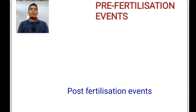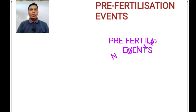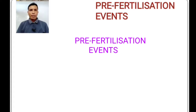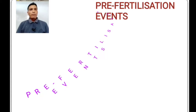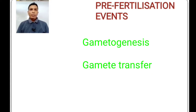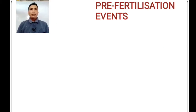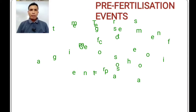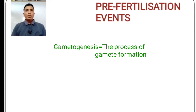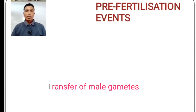Pre-fertilization events of sexual reproduction occur prior to the fertilization event. In pre-fertilization events, gamete formation and gamete transfer would be there. Gamete formation is known as gametogenesis. After gamete formation, the male gamete will be transferred from the male reproductive organ to the female reproductive organ.